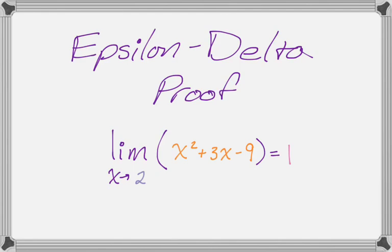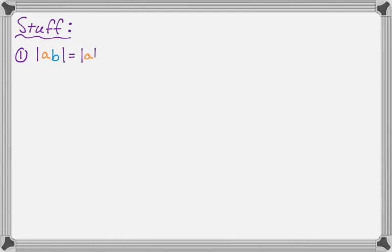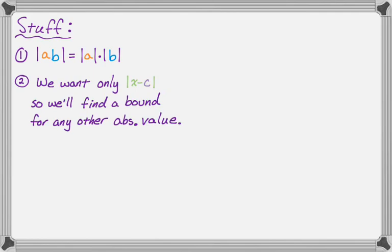This one's kind of interesting if you've only done linear proofs. There's an extra step — really a whole extra concept — that you have to deal with in these. So there are a couple of things you need to know. First, the absolute value of a times b is equal to the absolute value of a times the absolute value of b. We're going to use that when we do these sorts of proofs. The next thing is we want only the absolute value of x minus c when we're manipulating the epsilon inequality, and anything else we'll have to find some sort of bound for.